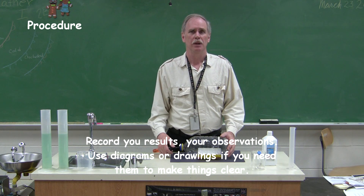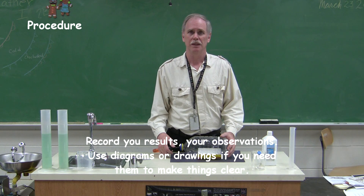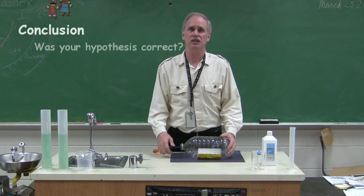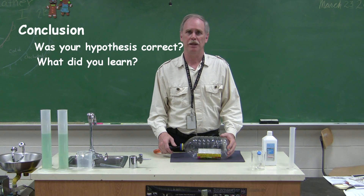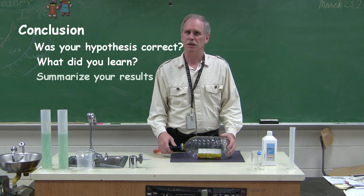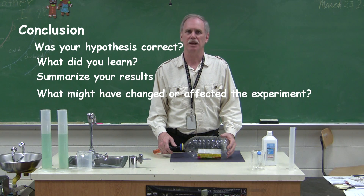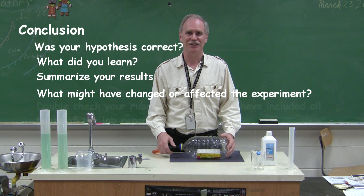Now you want to record your results. In this particular experiment, these are observational results — what did you see, what did you hear? As you write your conclusion, remember to tell me whether your hypothesis was correct or not, what you learned from this experiment, and briefly summarize the results. Also tell me what we might have done differently that could have changed the results, and double-check your rubric to make sure you've got all parts of the lab complete.